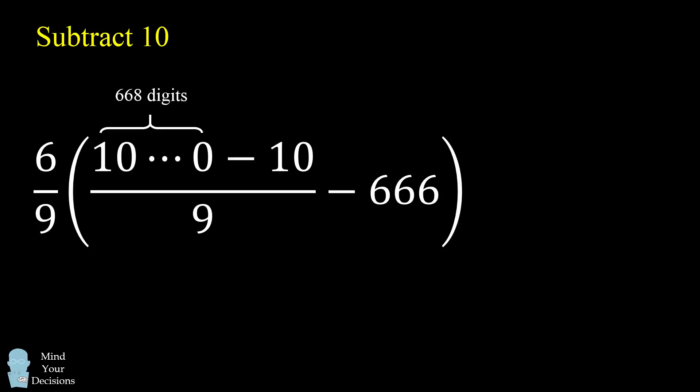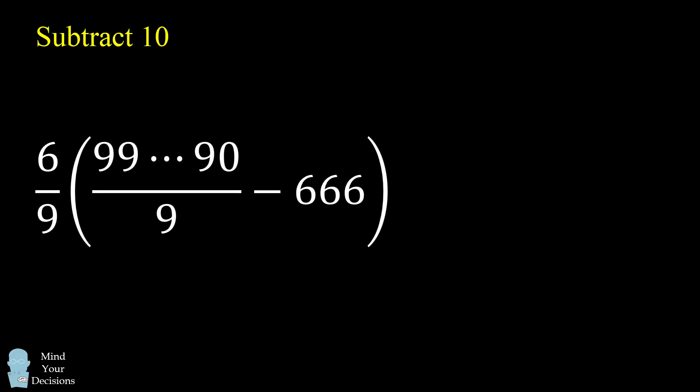We now subtract 10. So when we have a number that's 1 followed by a bunch of zeros, and we subtract out 10, we're going to end up with the number that's all these 9's, and the very last two digits are 90. This number in particular will have one fewer digit, so it'll be 667 digits long.